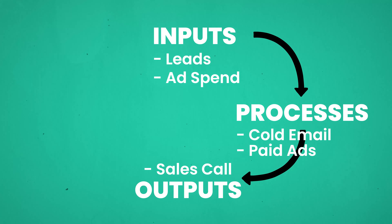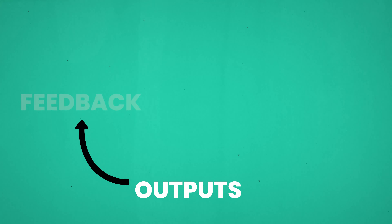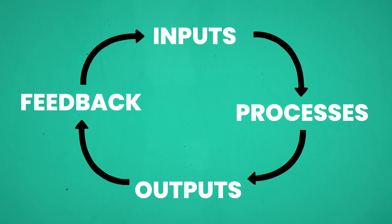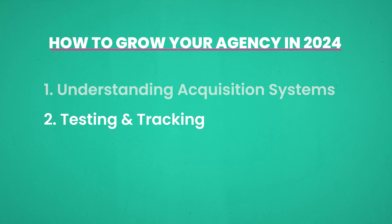So inputs, processes, outputs — and then your outputs provide feedback. We can take that feedback and use it to change our inputs, which changes our processes, and we can change everything based on the feedback we get. Understanding what an acquisition system physically looks like is the first step to ensuring we're able to operate it properly, because if we don't know what it is, we're going to struggle to operate it.